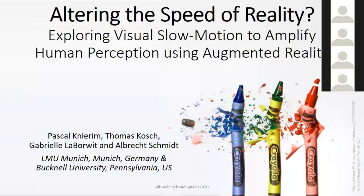The second talk is by Albrecht Schmidt. The title is 'Alternating the Speed of Reality: Exploring Visual Slow Motion to Amplify Human Perception Using Augmented Reality.'